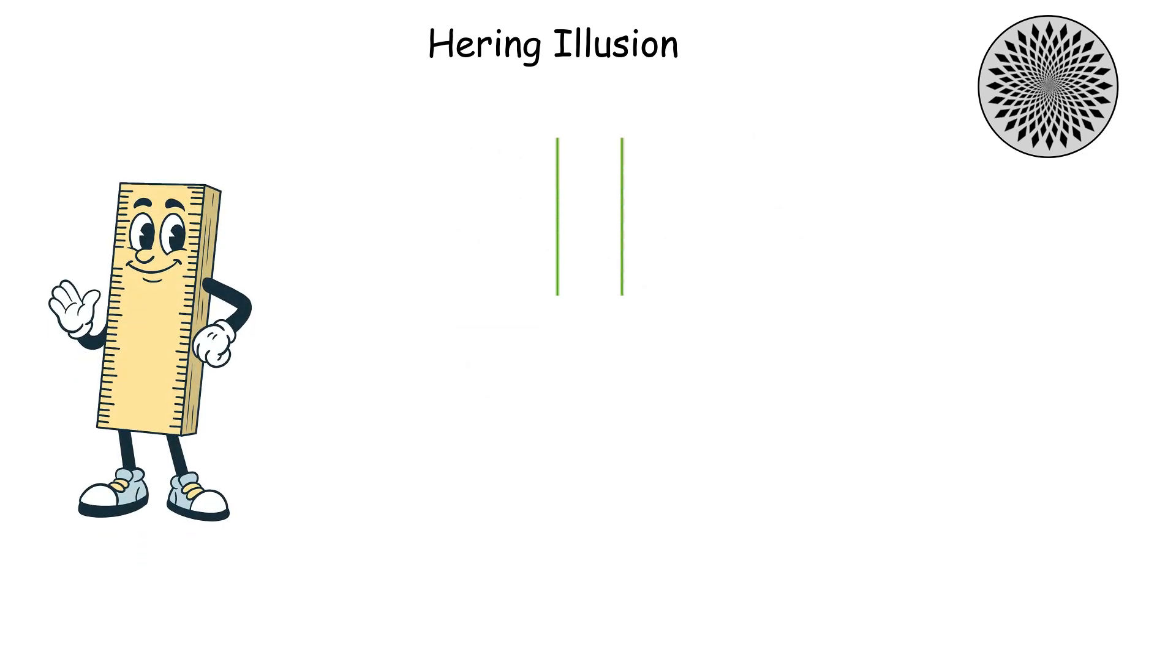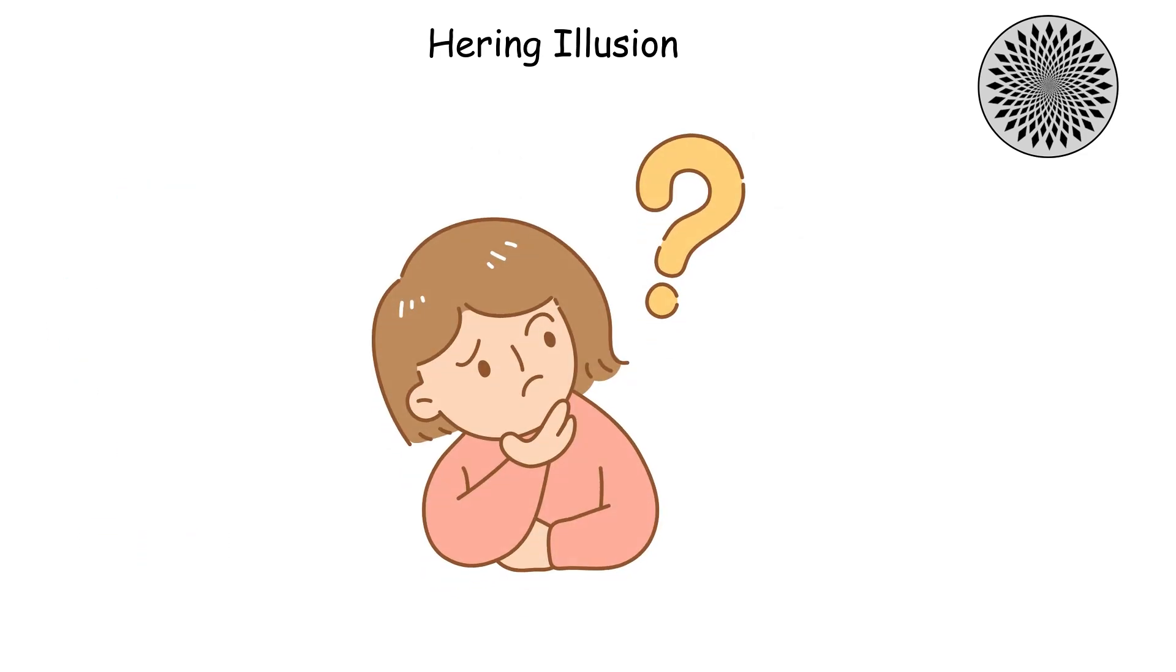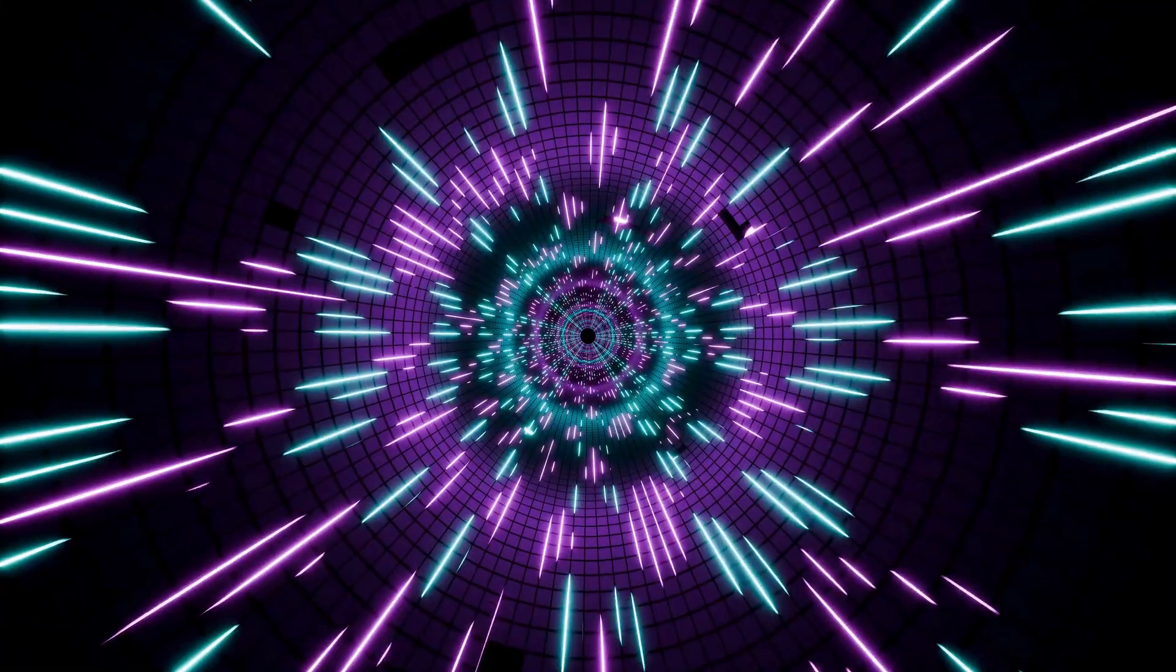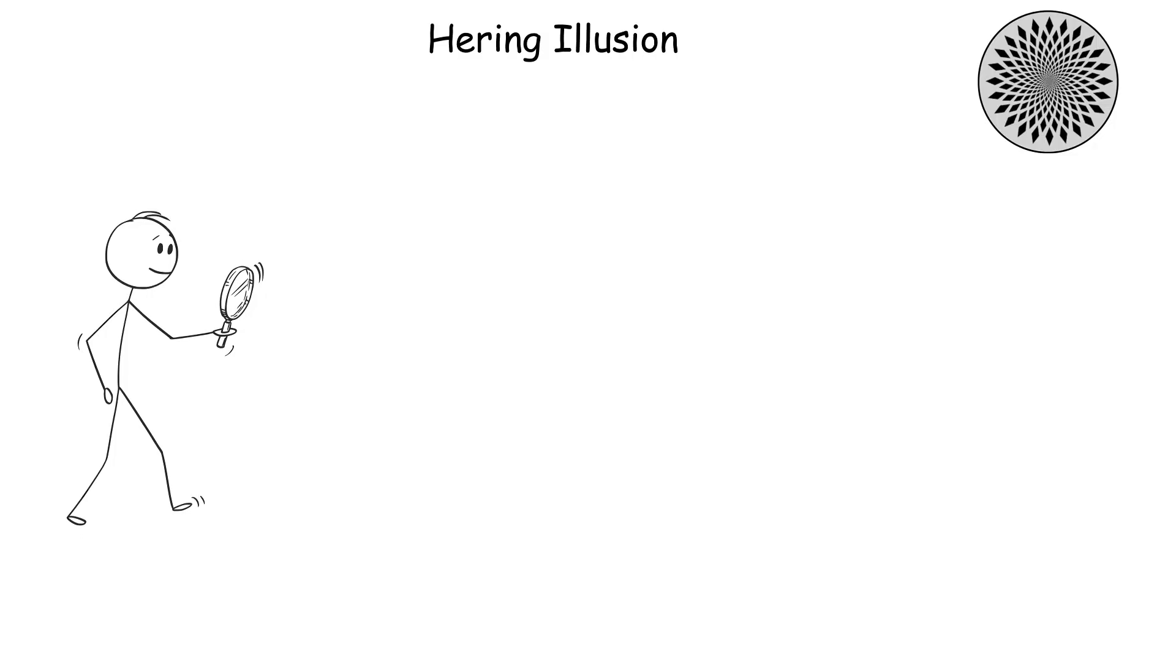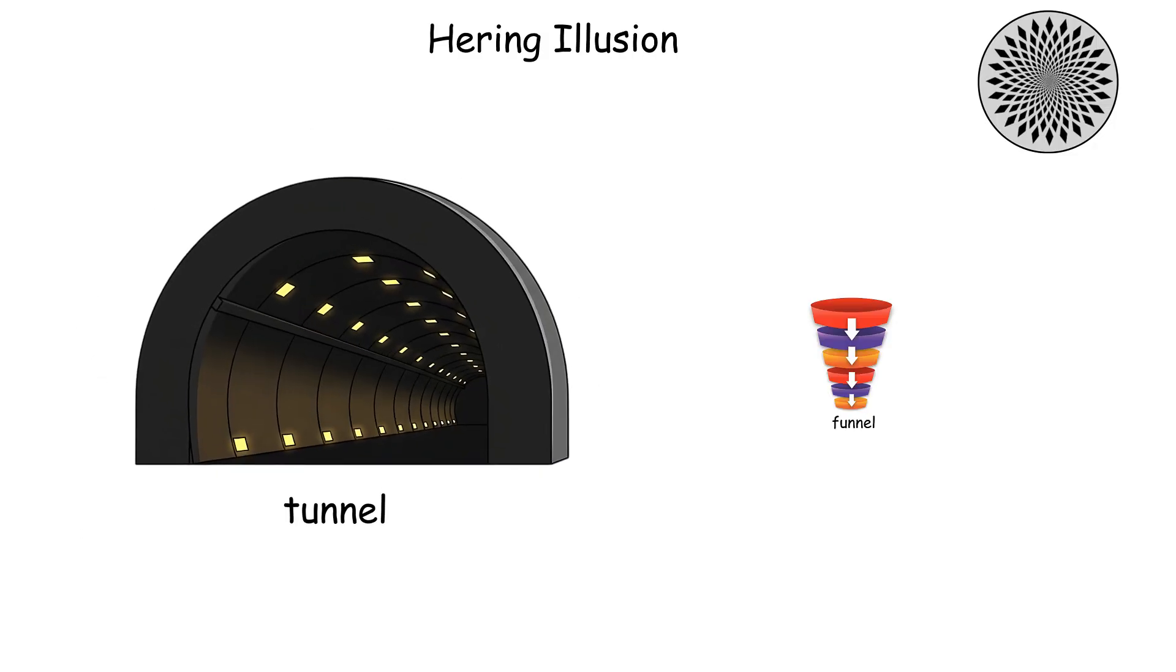The reason your brain gets tricked is that those radiating background lines create a false sense of depth and perspective, like you're looking down a tunnel or into a funnel.